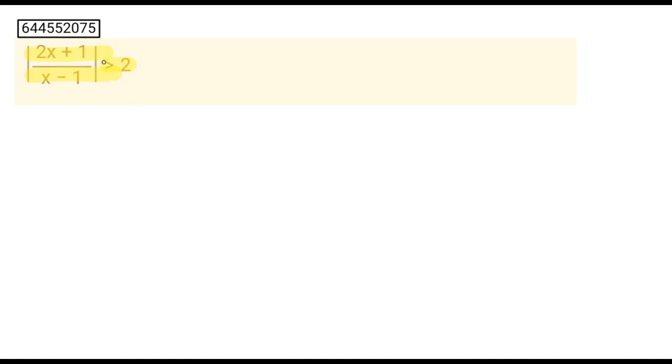The concept here is, if greater than sign is towards mod, then it breaks into two parts. First is, (2x + 1)/(x - 1) greater than 2.